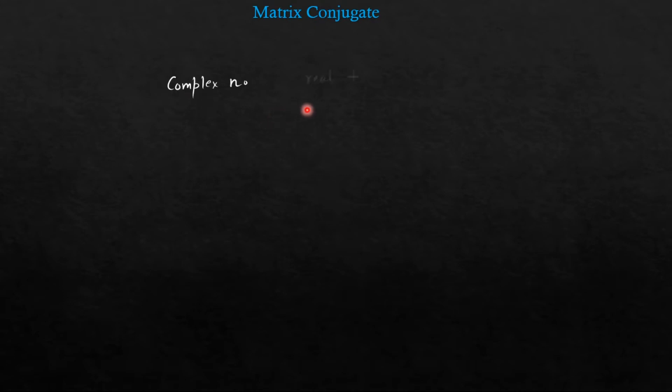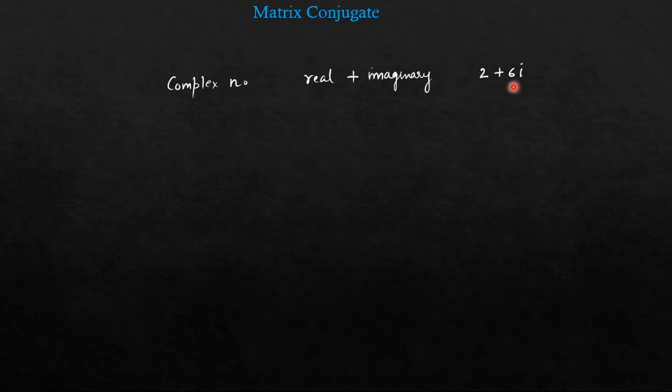Moving on to the next topic, that is conjugate of a matrix. Now what do you mean by conjugate? First of all, when any matrix consists of a complex number. What do you mean by complex number? A complex number is a number which consists of real plus imaginary part. For example, 2 plus 6i. Here 2 is the real part and 6 is the imaginary part.